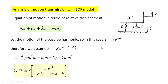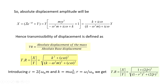Using complex representation, the absolute displacement X = Z·e^(-iφ) + Y. The amplitude of the absolute displacement becomes X = Y·(k + icω) divided by (k − ω²m + icω). This can be further simplified: X/Y = (k + icω) / (k − ω²m + icω).